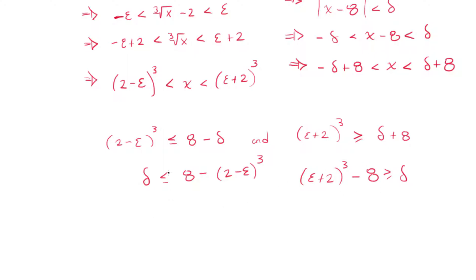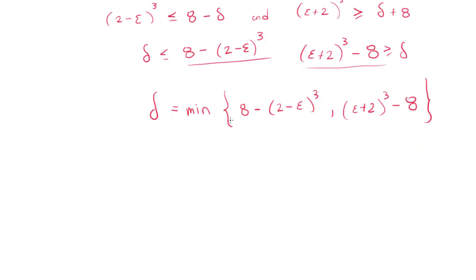So now we've trapped delta between this term and this term. Therefore, I'm going to choose delta to be the minimum of those two. So 8 minus 2 minus epsilon cubed, and epsilon plus 2 cubed minus 8. And there we have it. We found a delta that will satisfy the condition.